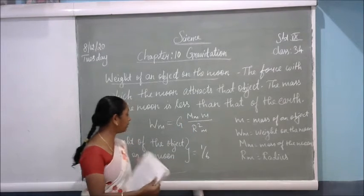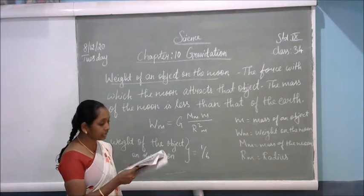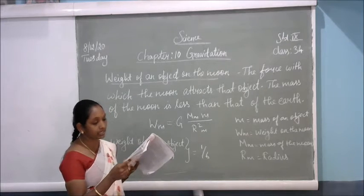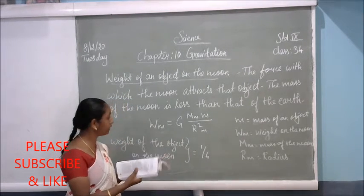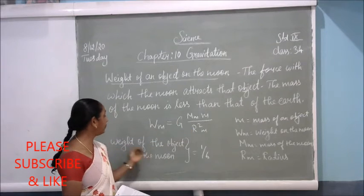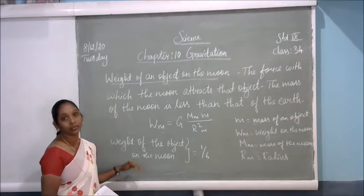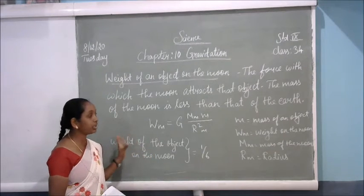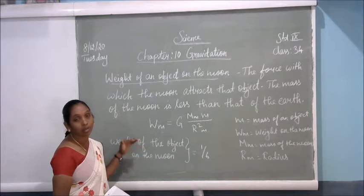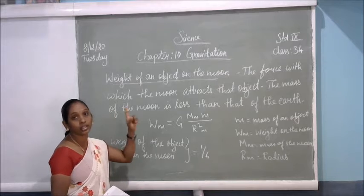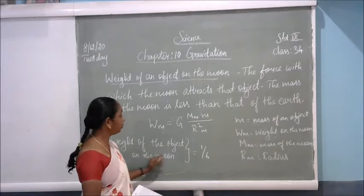All these values are given in your textbook. The G value is 6.7 × 10⁻¹¹ Newton meter square kilogram⁻². You substitute all the values in this formula, and finally we will get 1/6. So how much will the object's weight be on the moon? For example, if one object weighs 6 kilograms on earth, the same object will weigh 1/6 of that on the moon. The weight of the object on the moon is 1/6 of its weight on earth.